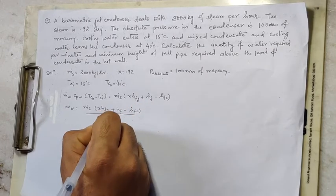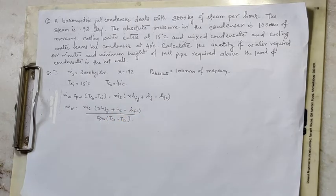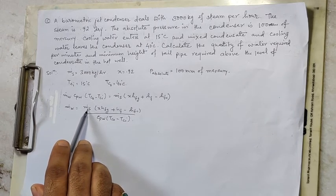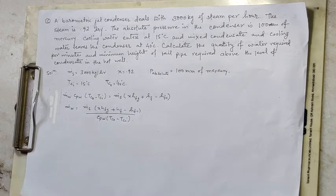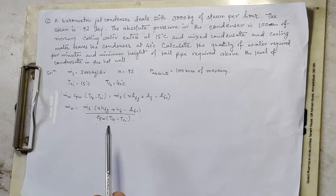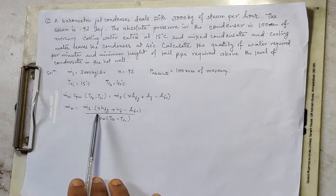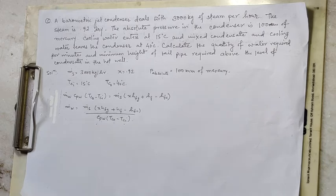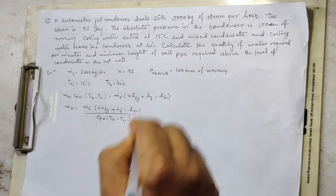Mass flow rate of steam is given as 3000 kg/hr. cpw (specific heat of water) is 4.187 kJ/kg·K. Tco is 40°C and Tci is 15°C. x is given as 0.92. Now we need to find the enthalpies hfg, hf, and hfc from steam tables at the condenser pressure.